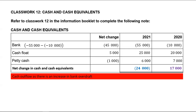To determine your net change in cash and cash equivalents, you simply take negative 24,000 minus 17,000 — that is negative 24,000 minus a positive 17,000, which is negative 41,000. That is your net change in cash and cash equivalents, which is your net cash outflow. Another way of getting it: take negative 45,000, add 5,000, minus 1,000 — it will still give you negative 41,000.